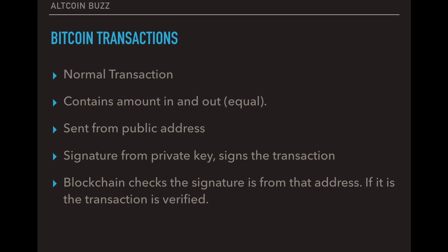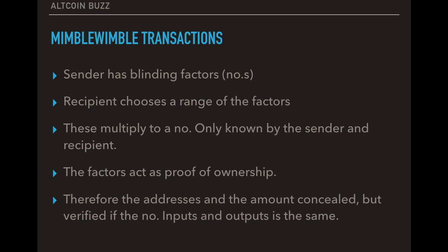However, Mimblewimble just improves on the whole system as a whole. So if we look at Mimblewimble transaction, so instead of the sender having those signatures from the private address, they have a series of numbers that multiply together to make a larger number. And some of these numbers that multiply together are hidden and they're called blinding factors. So the sender has these blinding factors and the recipient randomly selects a range of the factors. These multiply to a large number only known by the sender and the recipient. So then these factors are proof of ownership, basically.